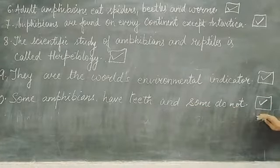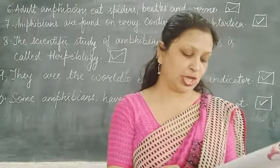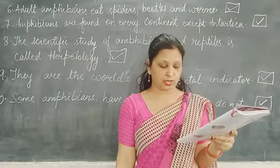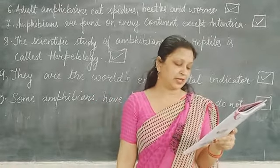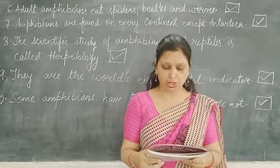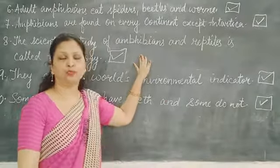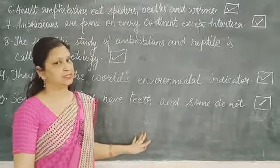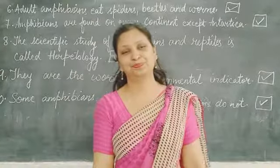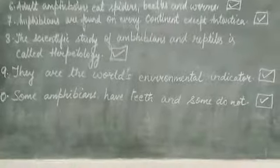The biggest amphibian is the Chinese giant salamander. It can grow to be 6 feet long and weigh 80 to 113 pounds. So you all have to do the full exercise in your books with a pencil. Thank you!